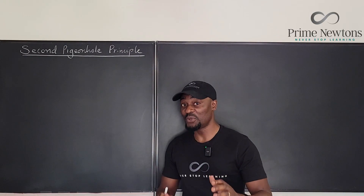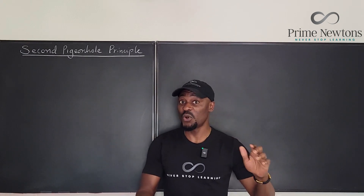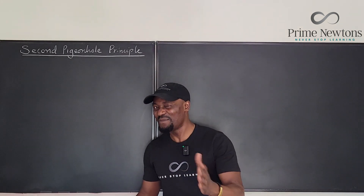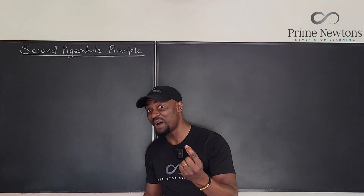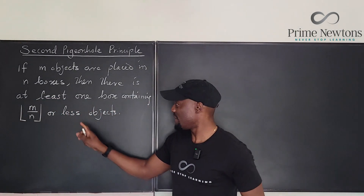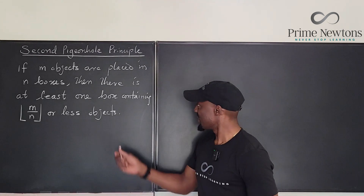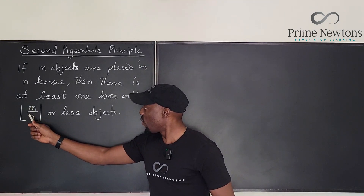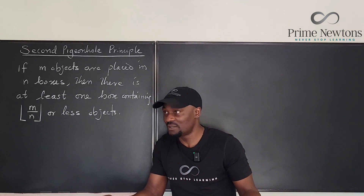The second pigeonhole principle states that if you place m objects in n boxes, then at least one of those boxes will contain the floor of the average or less. That's a very powerful principle. If m objects are placed in n boxes, then there is at least one box containing floor(m/n) or fewer objects.